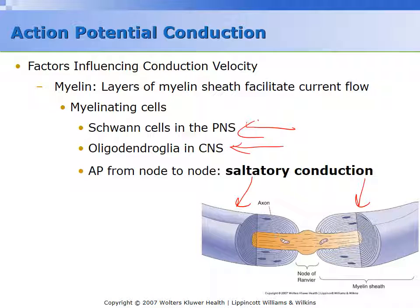Going back to the analogy of the leaky garden hose, this mechanism is similar to patching the hose with duct tape. However, the interesting thing here is that these myelin sheaths are not continuous — there are gaps between two myelin sheaths. This is intuitive because the myelin sheaths are created by cells, so they are not continuous. These gaps are known as nodes of Ranvier. These gaps are actually quite rich in voltage-gated sodium channels. The nodes of Ranvier can be somewhere between 0.2 to about 2 millimeters apart.